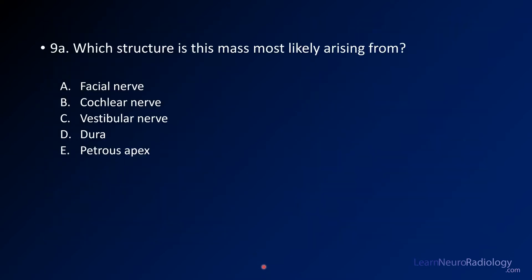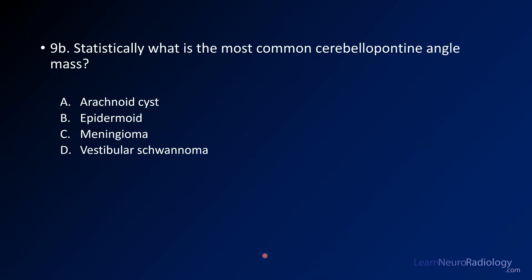Your first question is: which structure is this mass most likely arising from? Question B: statistically, what is the most common cerebellar pontine angle mass? Is it arachnoid cyst, epidermoid, meningioma, or vestibular schwannoma?